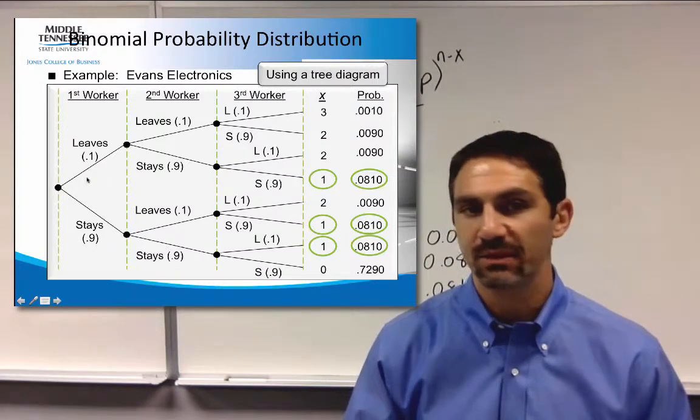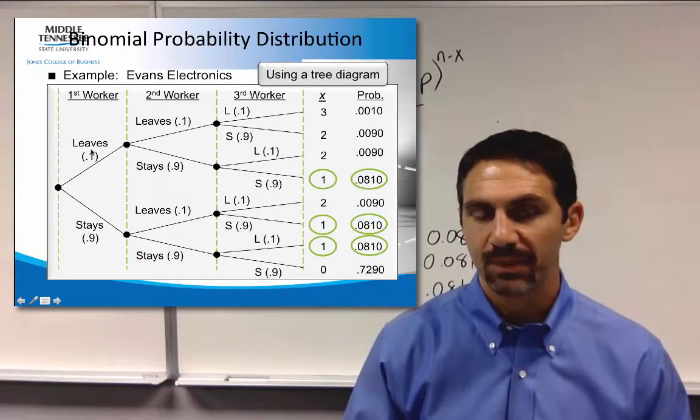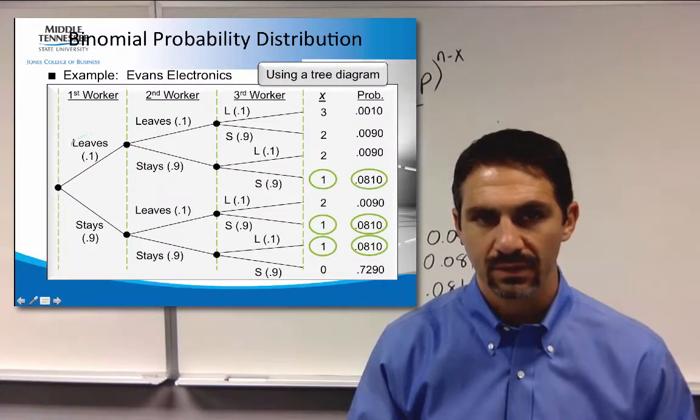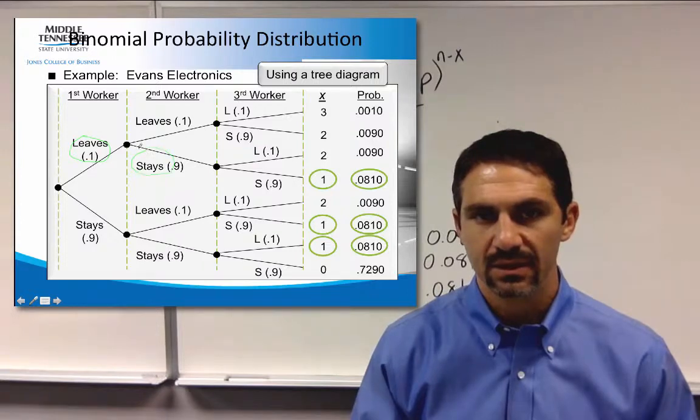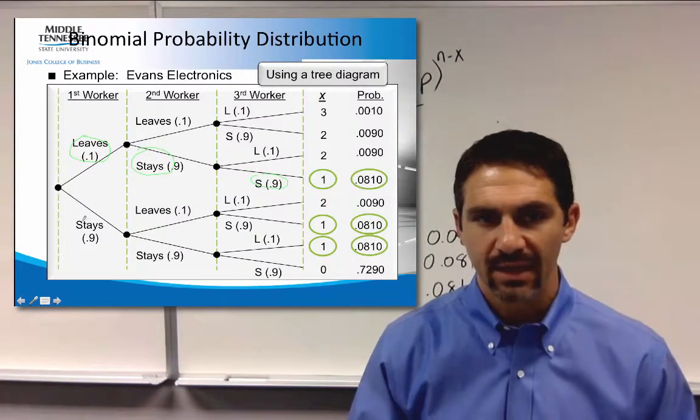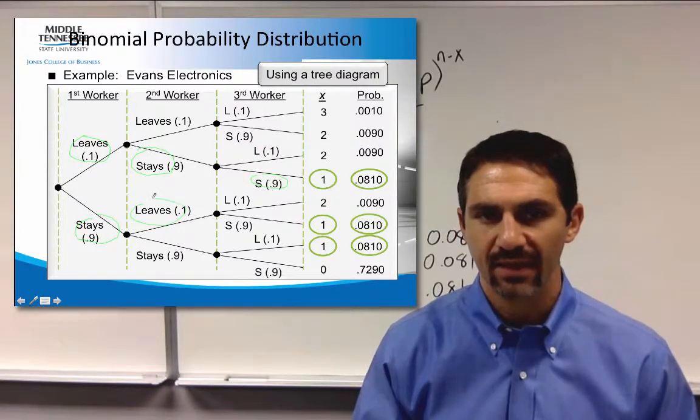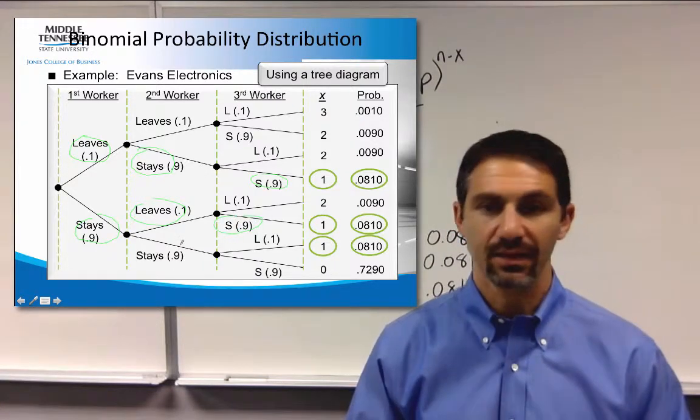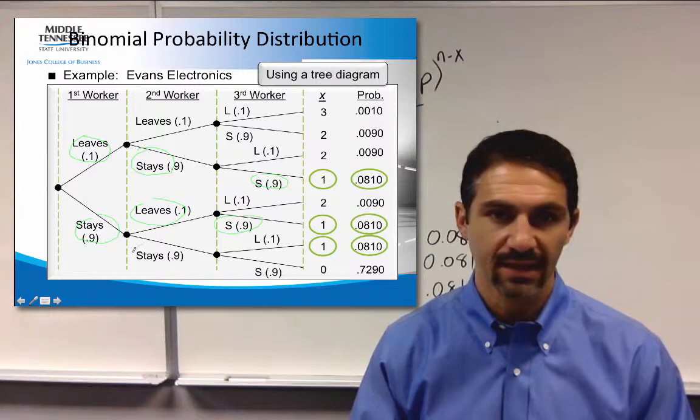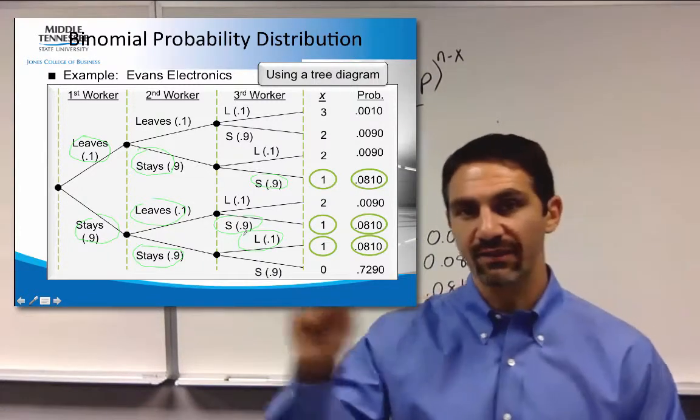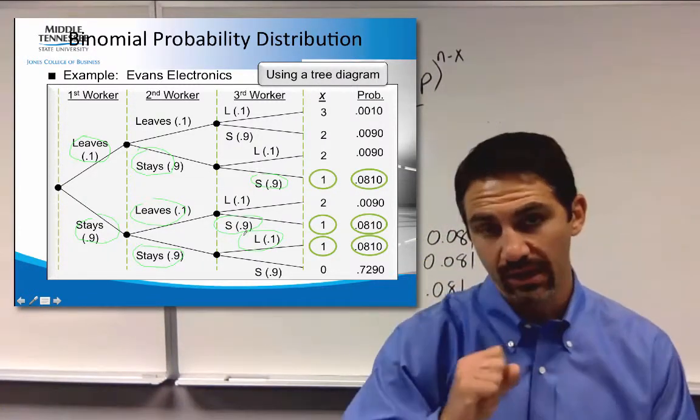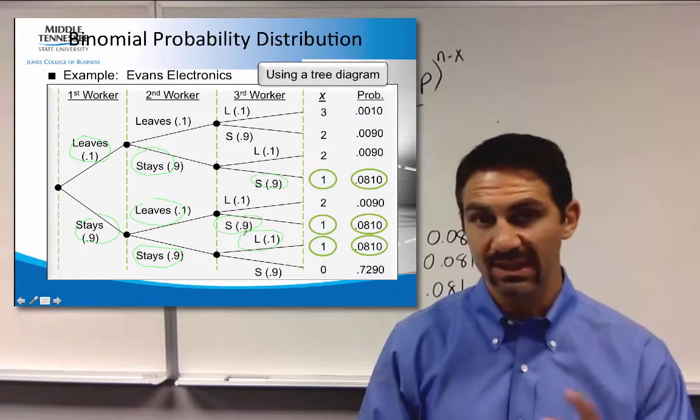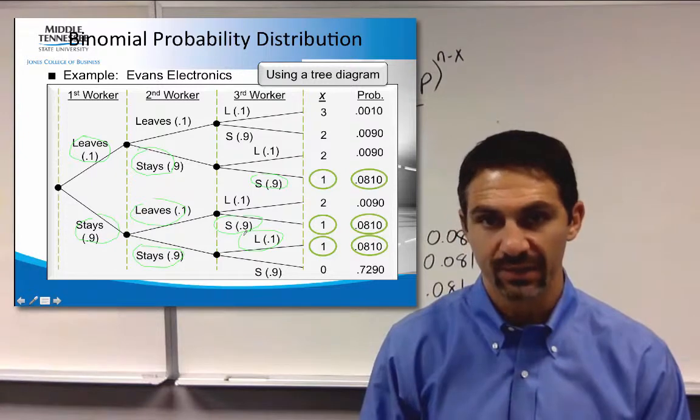Look at this in terms of a tree. Here's your person that leaves and then stays and stays. Here's your person that stays, then second person leaves, and the third person stays, and then stays, stays, and leaves. So three different possible ways to get to one person leaving, two people staying, or one success, and two failures.